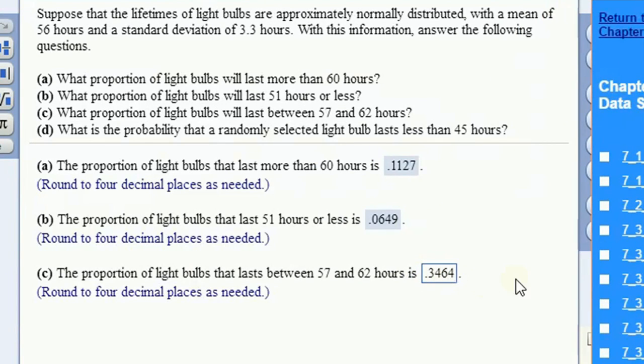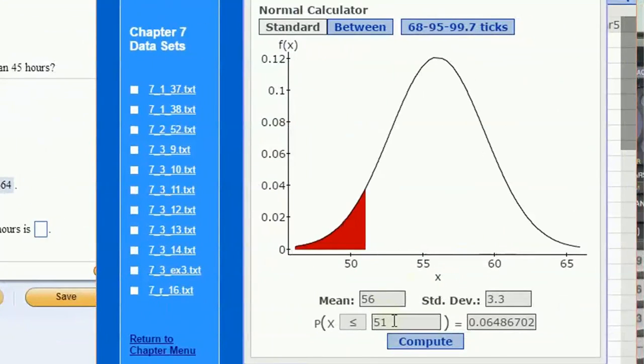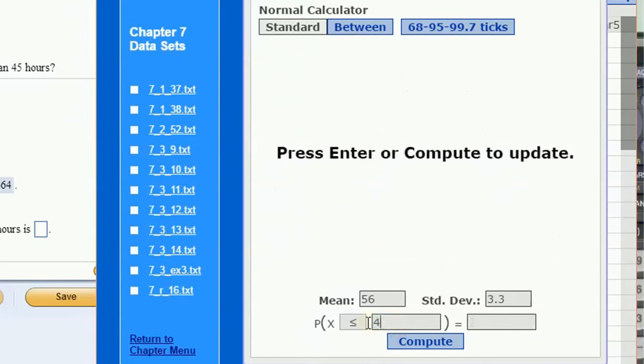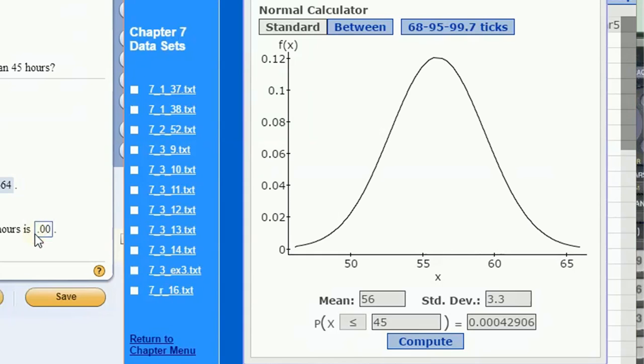And the probability that a random light bulb lasts less than 45. So let's back to standard. The probability that a random light bulb lasts less than 45 is the same as what proportion of light bulbs last less than 45. The probability and the proportion really are saying the same thing. You can see this is 0.0004, that's 0.04 percent, very few light bulbs.